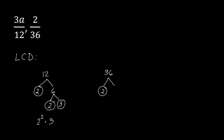Next, for 36: we start with 2, which is prime, and its partner is 18. We break down 18 into 2 and 9. Since 9 is not prime, we break it into 3 and 3, both prime. So the prime factorization of 36 is 2 squared times 3 squared.